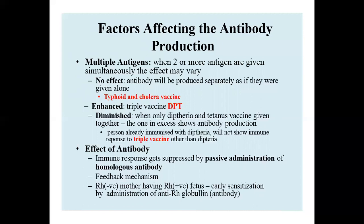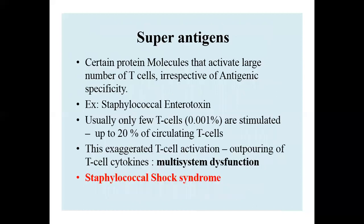For example, when a mother has a negative RH factor and the fetus has a positive RH factor, early sensitization by administration of anti-RH globulin can prevent clotting of fetal blood through this antigen-antibody reaction.